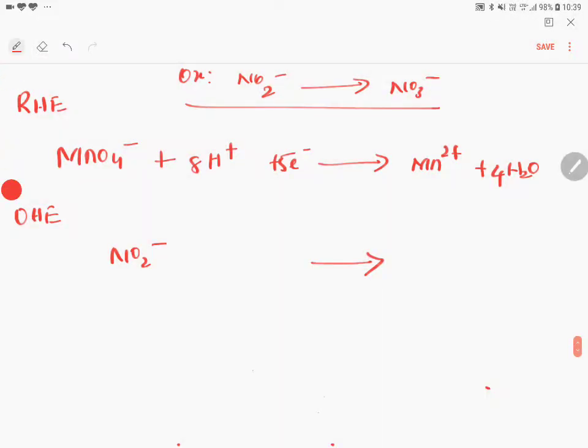Nitrite will get converted to nitrate. Electrons will come on the right hand side because it is oxidation. Oxidation half equation. OHE means oxidation half equation.